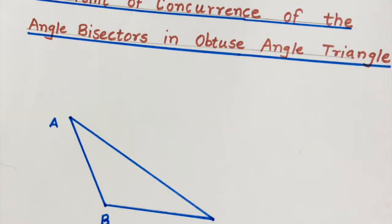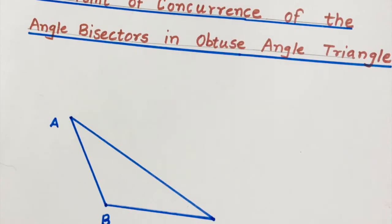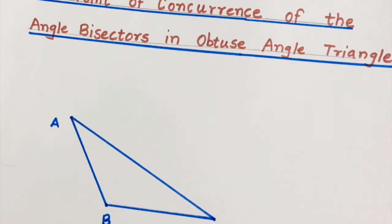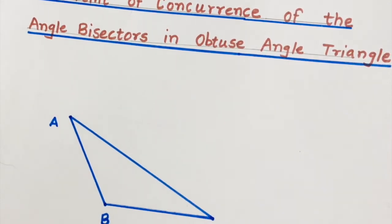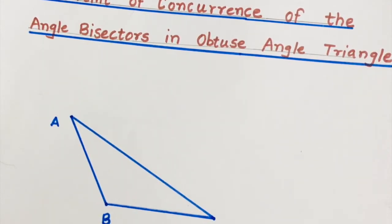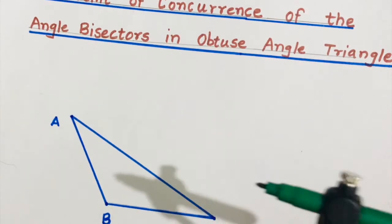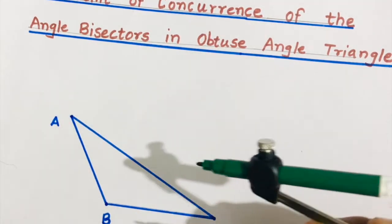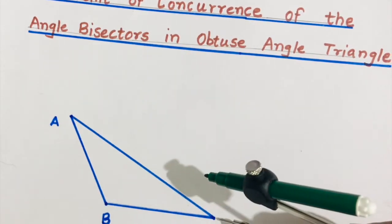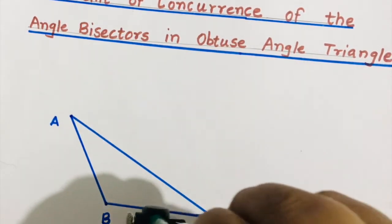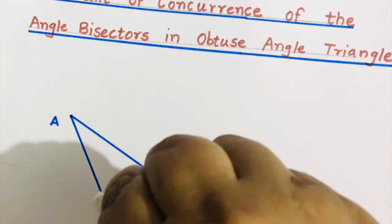Now you need to draw angle bisector. First of all we are drawing angle bisector of angle C. Take the convenient distance on your compass. Keep the steel head at point C. Draw arcs.